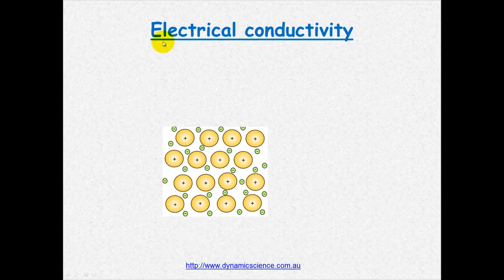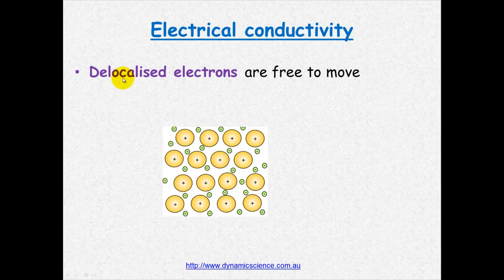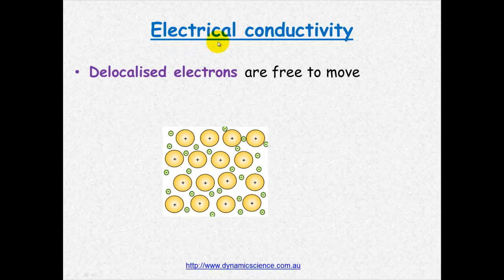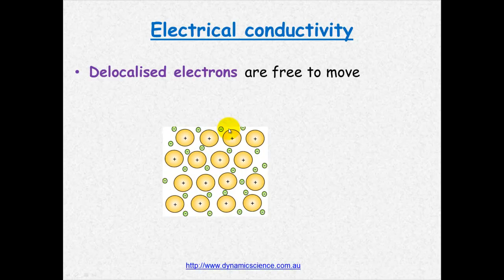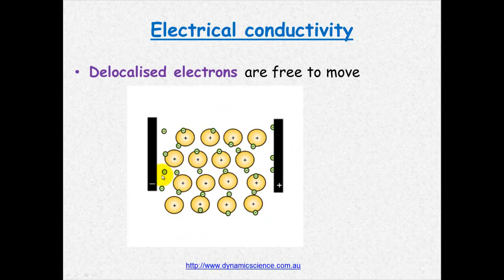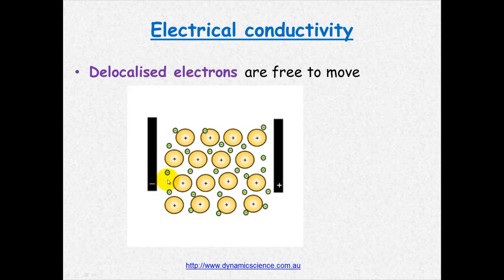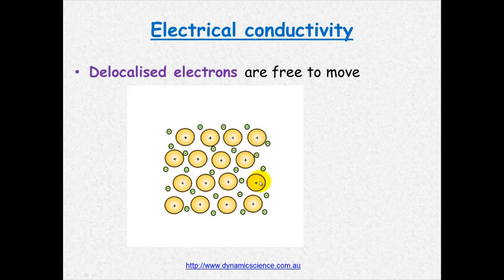They conduct electricity and the reason for that is because of the sea of delocalized electrons. For something to conduct electricity there must be some form of free moving charge. In this case we've got the electrons that are able to move, so what happens when we apply a charge is the electrons will move from the negative terminal here and go in the direction of the positive terminal. They're attracted to the positive side. With this free moving charge metals are able to conduct electricity.